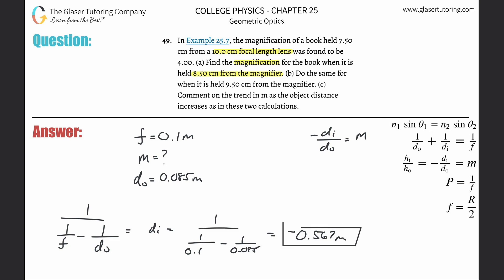So now what we're going to do is now that we know DI, we can take that and plug it into the equation. Plug in the signs and all. So this is negative, negative 0.567, all divided by 0.085. That will equal the magnification.